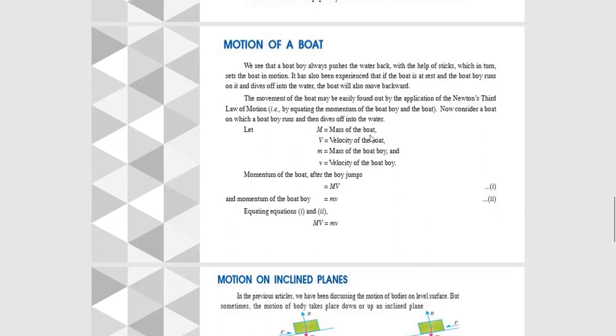Let M = mass of boat, V = velocity of boat, m = mass of boat boy, and v = velocity of boat boy. Momentum of boat after boy jumps is MV and momentum of boat boy is mv. This gives equation one equals equation two: MV = mv.